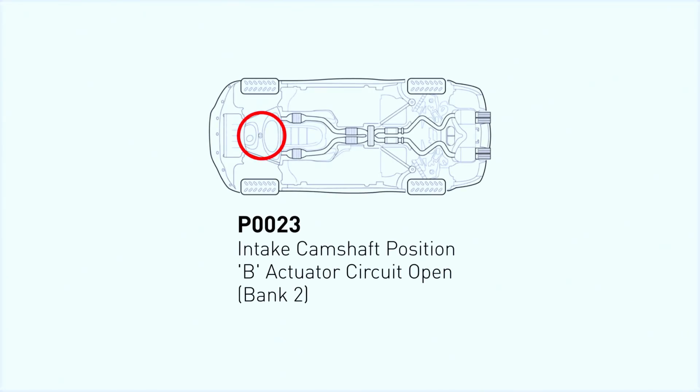The P0013 code refers to a problem with the exhaust camshaft position actuator, specifically on bank 2 of your engine. This code stands for exhaust camshaft position actuator circuit open bank 2. Simply put, the ECM engine control module detects an issue with how the camshaft timing is being controlled, which can affect your engine's performance.